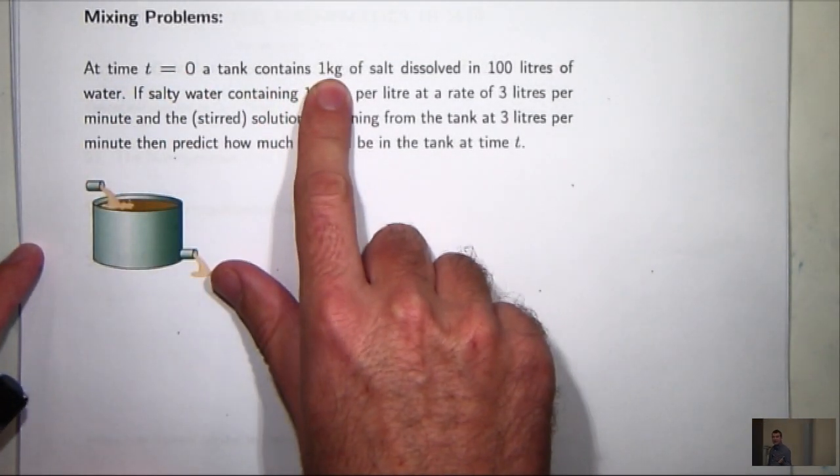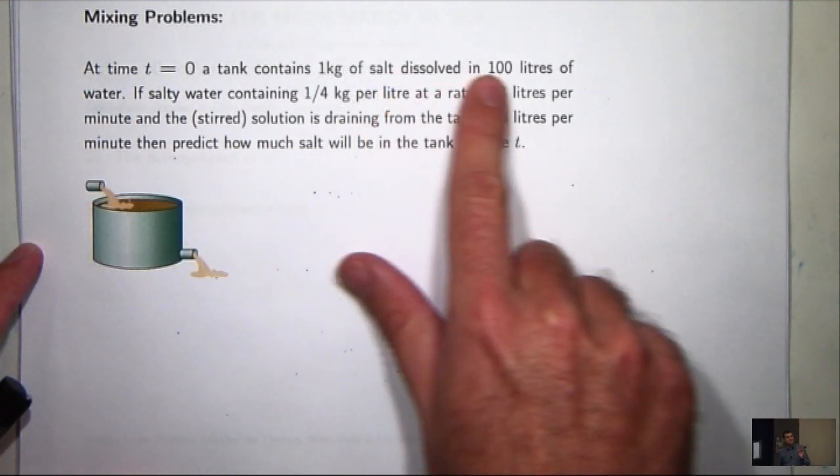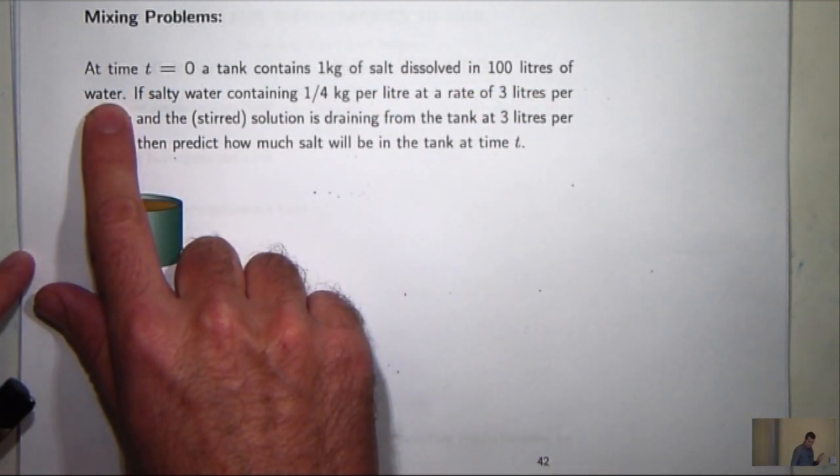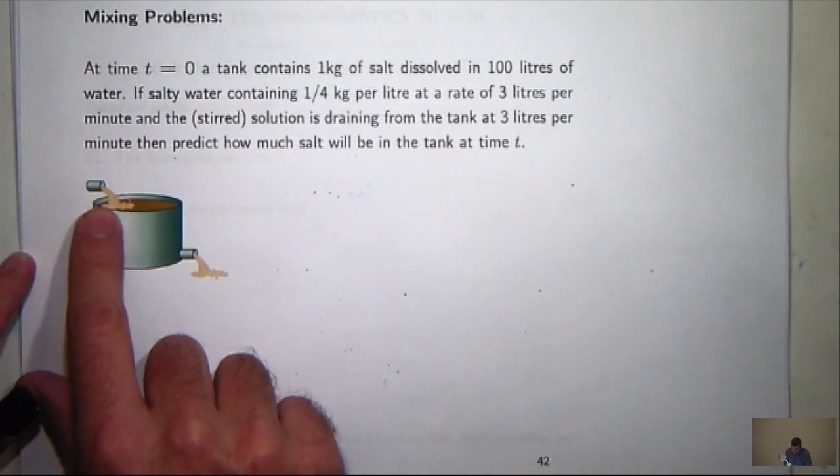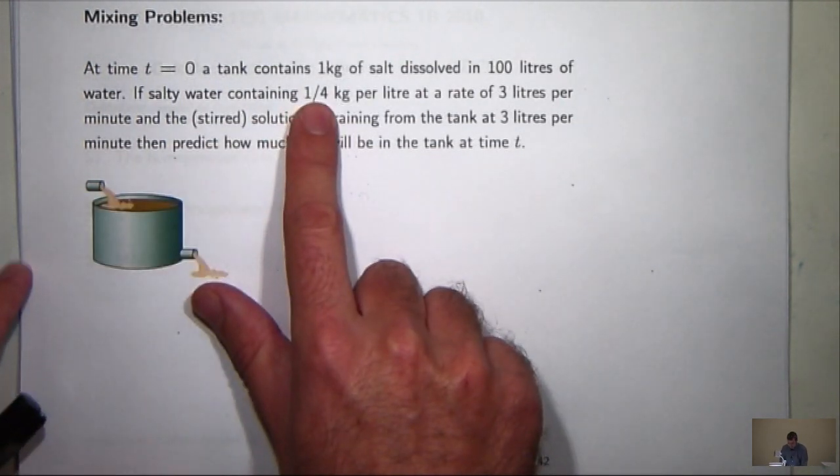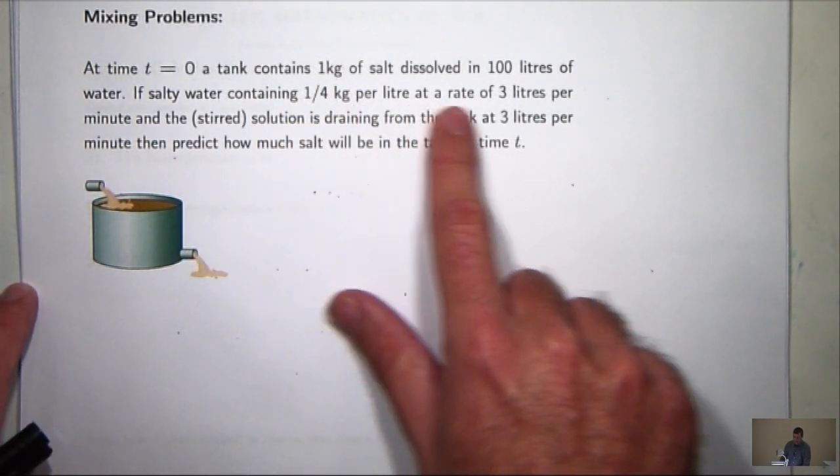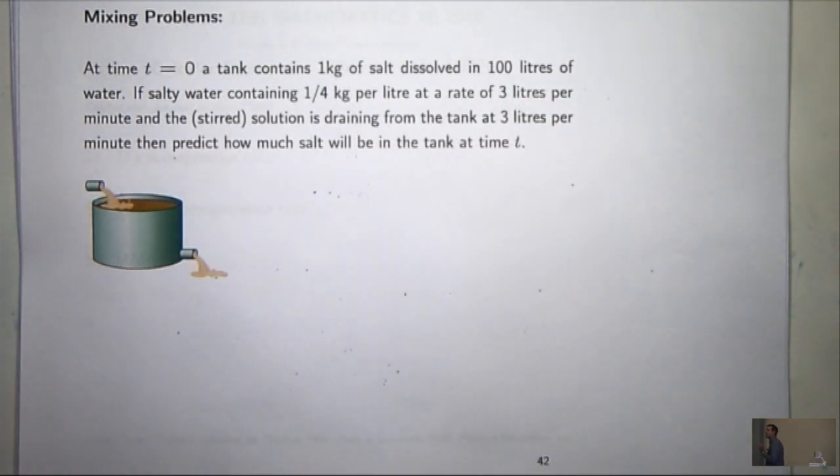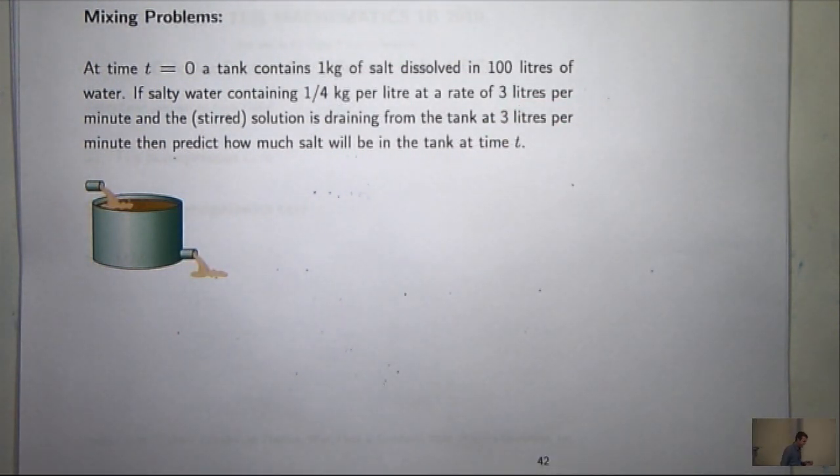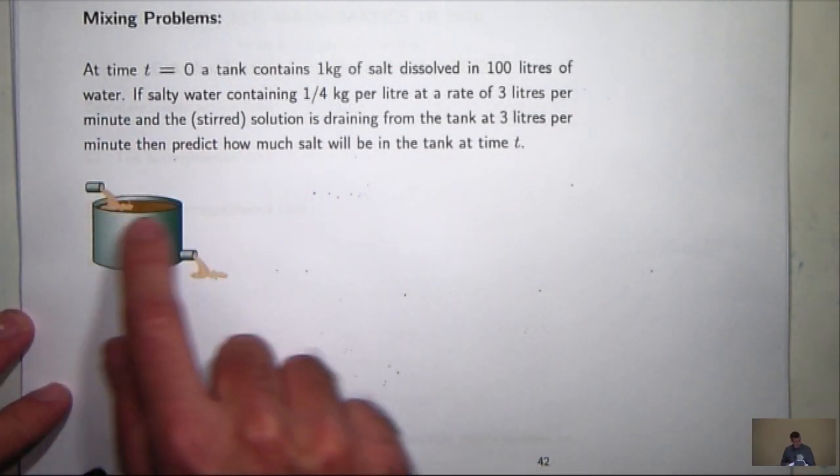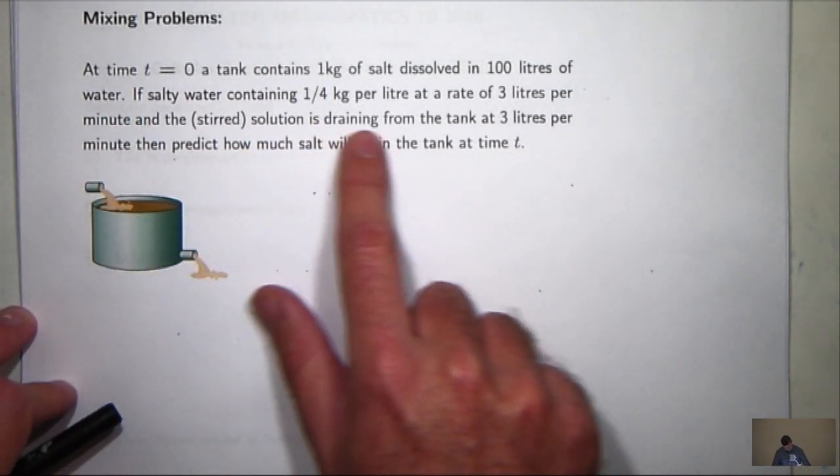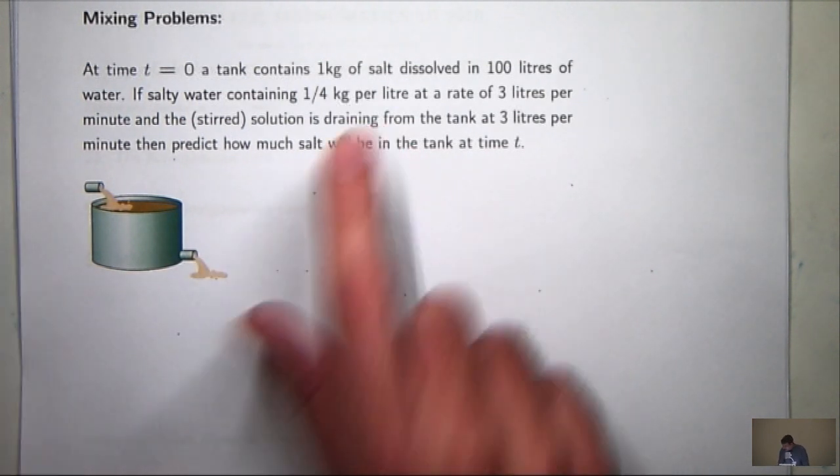So let's have a look. At time t equals 0, a tank contains 1 kilo of salt dissolved in 100 litres of water. And salty water is being pumped into the tank and that salty water contains 1/4 kg of salt per litre and the substance is coming in at 3 litres per minute. The solution is then stirred and there's another outlet pipe where the stirred solution is draining at 3 litres per minute. What you're asked to do is to predict how much salt will be in the tank at any time t.